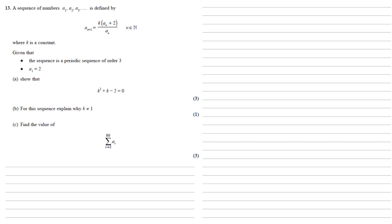A sequence of numbers A1, A2, A3 is defined by A n plus 1 equals K times A n plus 2 all over A n, where K is a constant. Given that the sequence is a periodic sequence of order 3, and that A1 equals 2, we need to show that K squared plus K minus 2 equals 0.